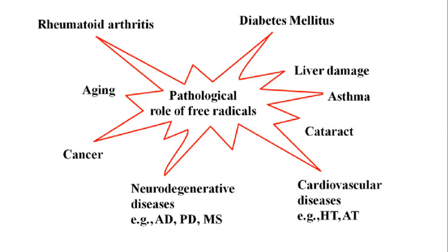There are also negative effects of free radicals, such as diabetes mellitus, liver damage, asthma, cataract, heart diseases, and cardiovascular diseases. Free radicals are associated with high pollution levels. On a daily basis we are generating lots of free radicals, and to combat them is very tough. Nowadays you can see in our surroundings many people are developing different kinds of disorders, and one of the reasons behind those disorders can be free radicals.